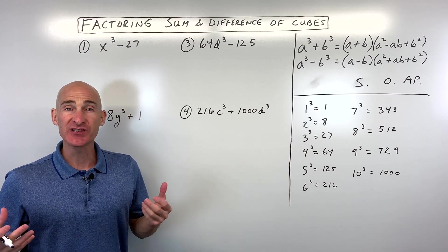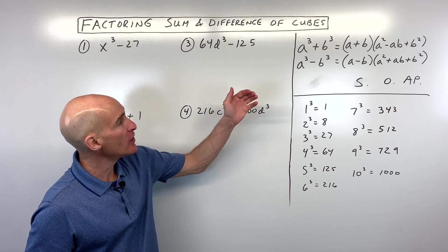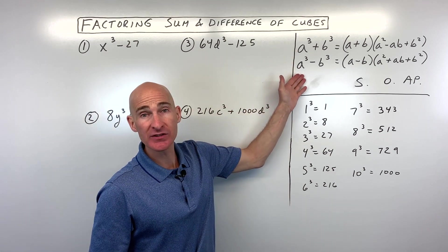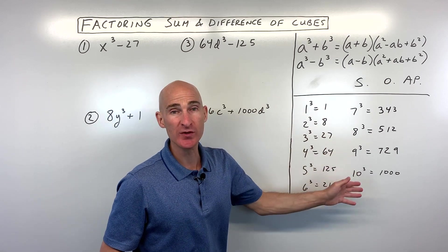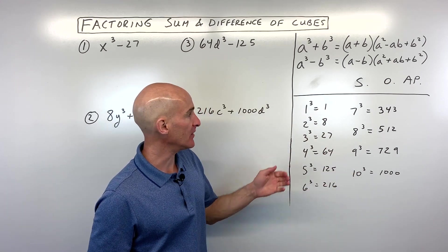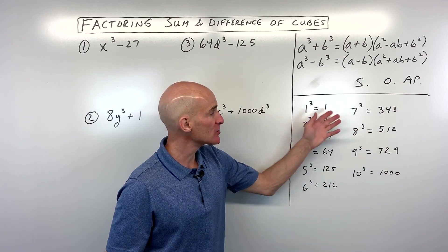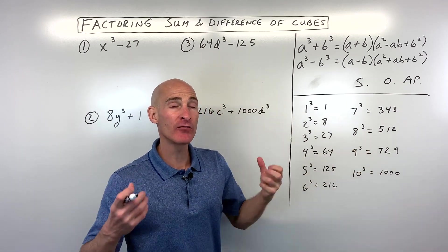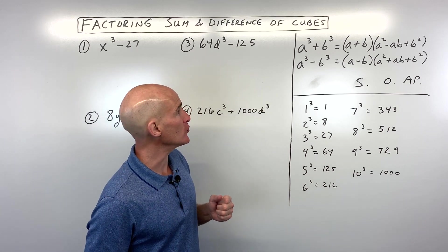In this video, you're going to learn how to factor the sum and difference of two cubes. The first thing you want to know are the formulas. We're going to go over that, but you also want to know these perfect cubes, these common ones that come up over and over again, like 1³ = 1, 2³ = 8, and 10³ = 1000. See if you can memorize these. That'll be helpful for recognizing when you have a sum of two cubes or a difference of two cubes.